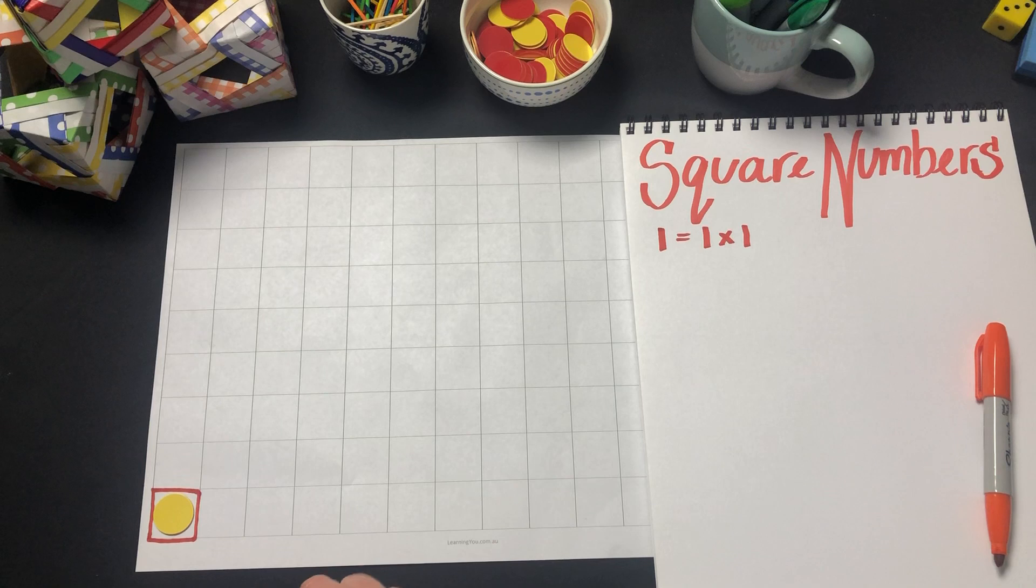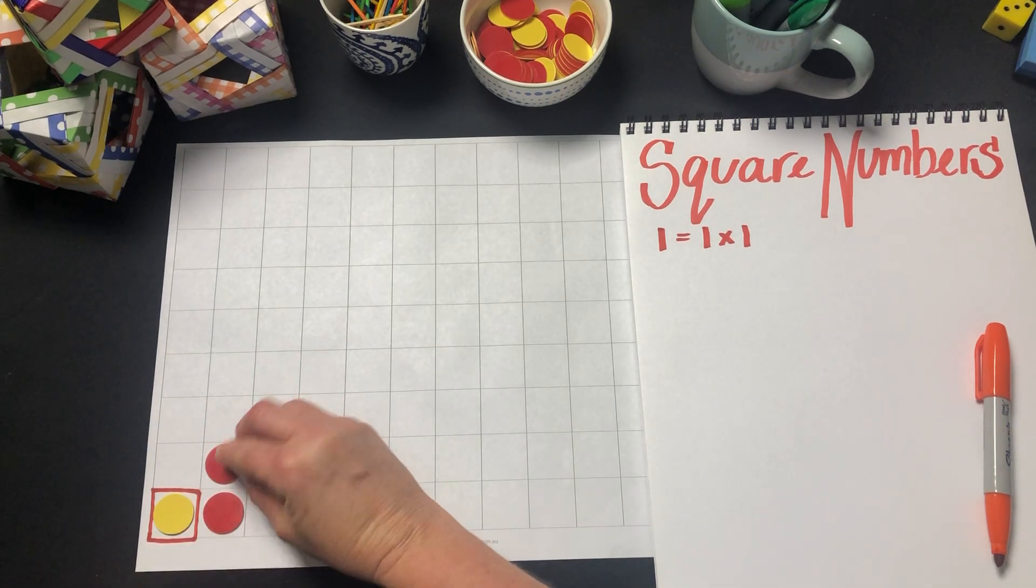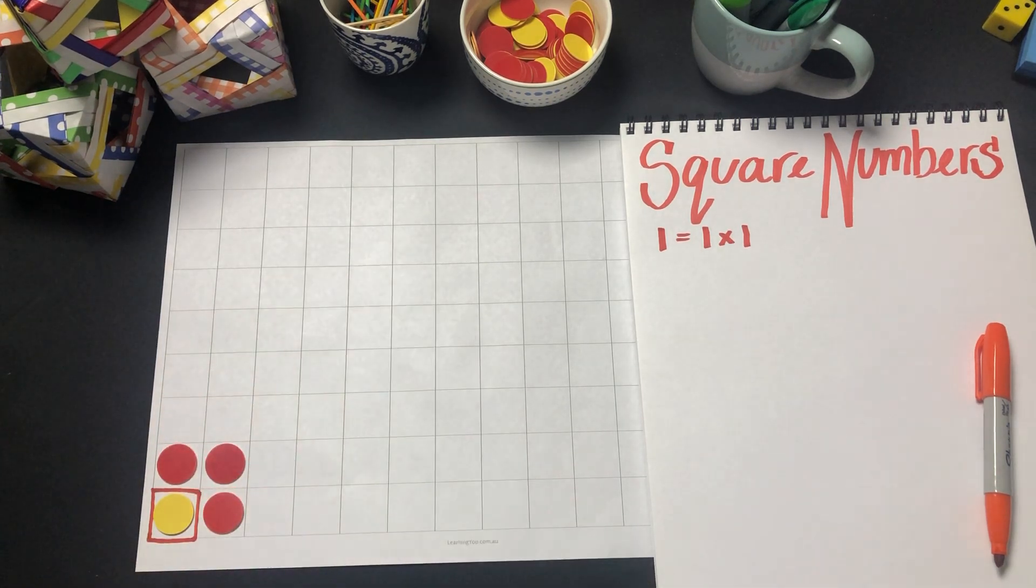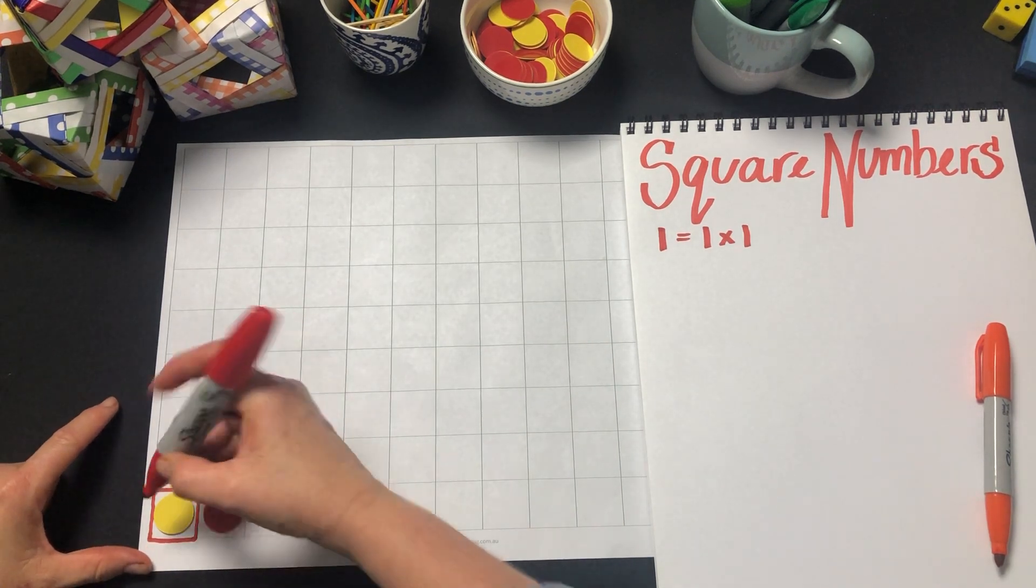Now if we add on to create the next square, we can see that 4 is a square number.